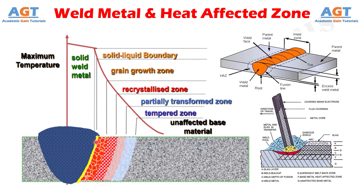Heat Affected Zone is a part of the base metal that is not melted during fusion welding, but is heated to an elevated temperature — below the melting temperature of the concerned material — before cooling down to room temperature. Heat Affected Zone is located surrounding the weld metal.